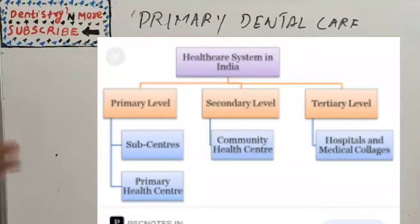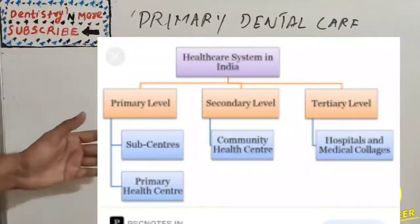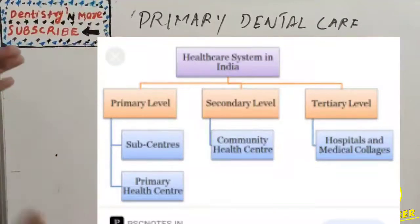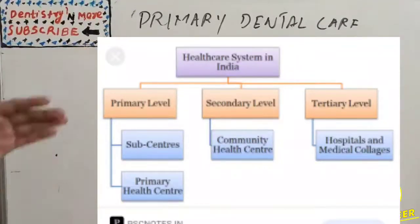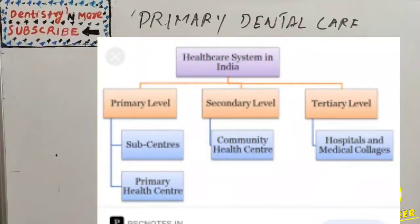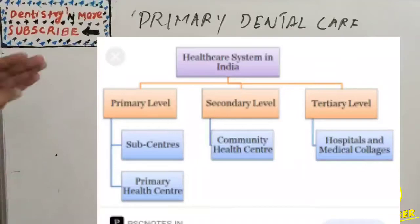Those levels include the primary level, where sub-centers and primary health centers provide care to the people; the secondary level, which includes district hospitals and community health centers serving as referral units; and the tertiary level, where all treatments are available as referral units of secondary level. The same concept applies to dental care — primary dental care is dental care provided at the primary level, that is, at the grassroots level at sub-centers and primary health centers.